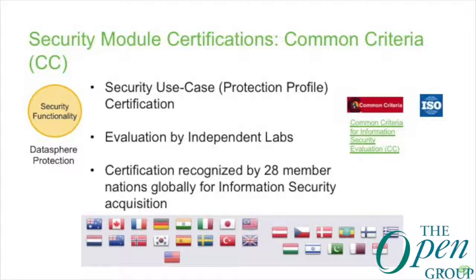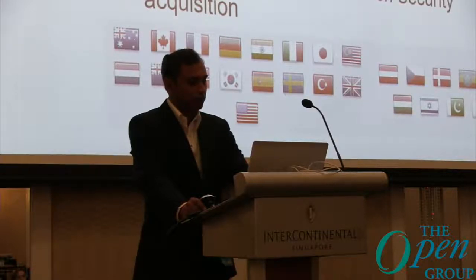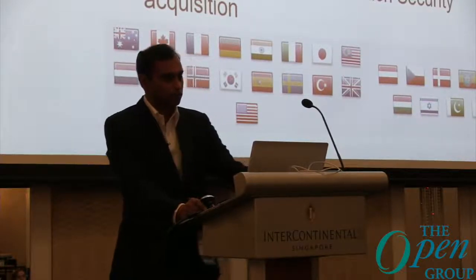Next is security functionality — achieving and communicating the security and data protection we intend to provide in our products. This is achieved through Common Criteria certification, which uses protection profiles. Common Criteria is recognized by 28 member nations globally for information security acquisition. Products certified with FIPS and Common Criteria solutions are for government and enterprise customers running highly secure, data-sensitive services and applications.